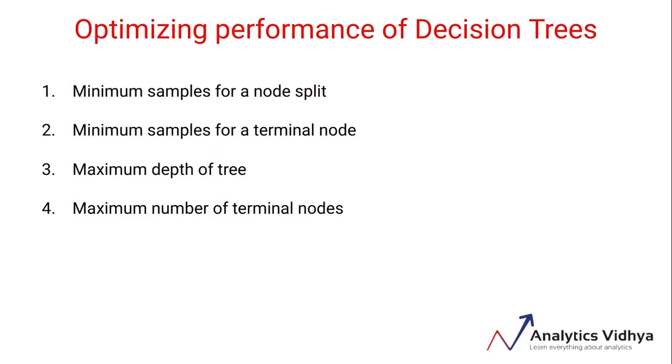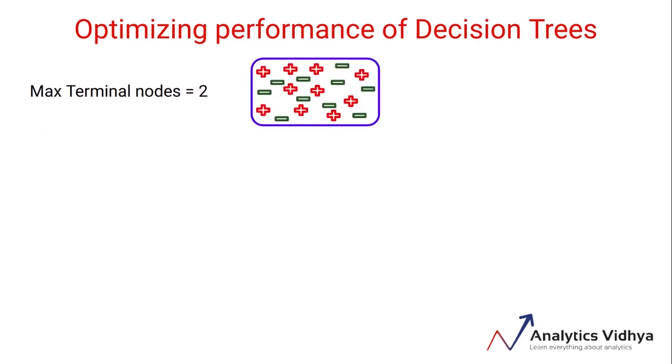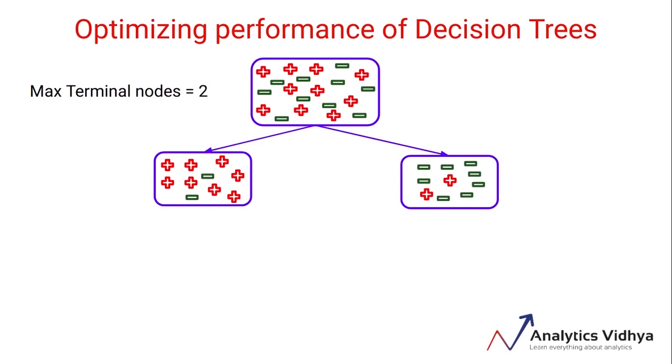We can also set the maximum number of terminal nodes, and if after splitting we have more terminal nodes than the specified number, it will stop the splitting process and the tree will not grow beyond that point. Let's say we set the maximum terminal nodes as 2 in this case. Since there's only one node, it will allow the tree to grow further. After the first split, we can see that there are two nodes now, and we've set the maximum terminal nodes as 2, so the tree will stop and will not grow beyond this point. This is how setting the maximum terminal nodes work, and it can help us to prevent overfitting.